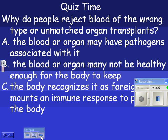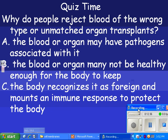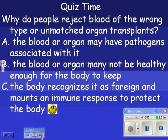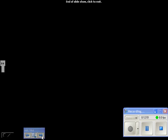Why do people reject blood of the wrong type or unmatched organ transplants? The body recognizes it as foreign and mounts an immune response to protect the body — that's it. And that's the end, folks.